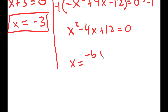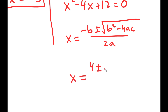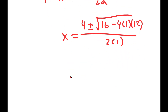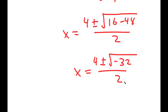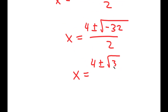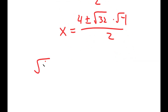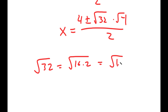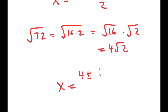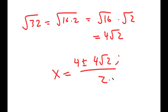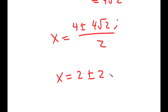To solve x squared minus 4x plus 12 = 0, I use the quadratic formula: x = (negative b ± √(b² - 4ac)) / 2a. This gives x = (4 ± √(16 - 48)) / 2 = (4 ± √(negative 32)) / 2. Simplifying √32 = 4√2, so x = (4 ± 4√2·i) / 2, which equals 2 ± 2√2·i.